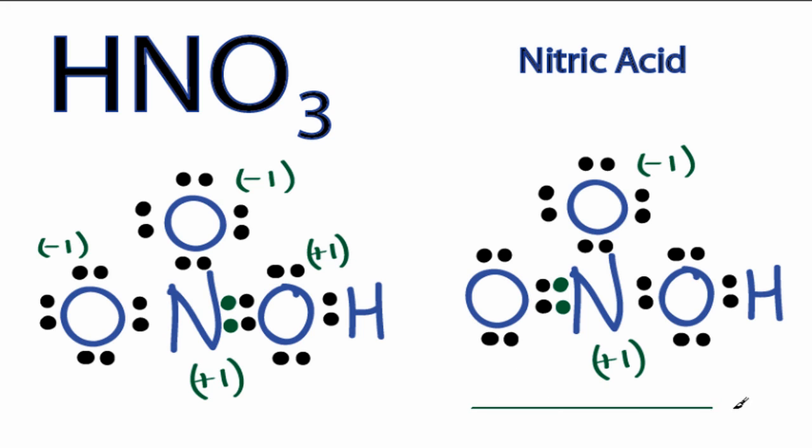So the best structure is going to be this one right here, where the formal charges are closer to 0 and they make sense. In both cases, they add up to a total charge of 0 for the molecule. This is Dr. B with the Lewis Structure for HNO3 Nitric Acid. Thanks for watching.